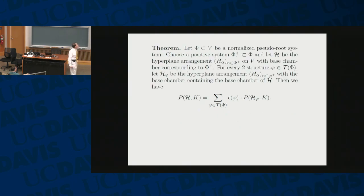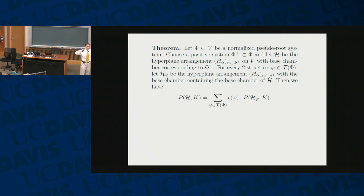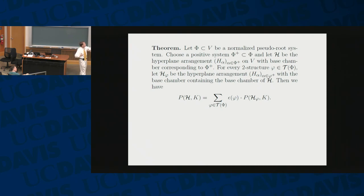There's the following nice result. If you are going to evaluate the pizza quantity for the Coxeter system, you can do that by summing over all two-structures, taking the sign of the two-structure, and then the pizza quantity for that two-structure. This allows us to work with pizza quantities for two-structures only, instead of the whole pizza quantity.